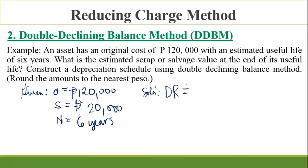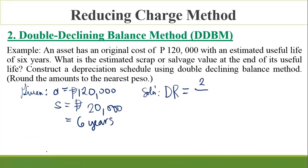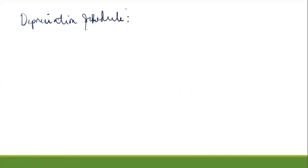The depreciation rate DR = 2/6 = 1/3. Now we build the depreciation schedule over six years.